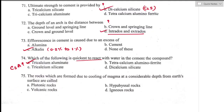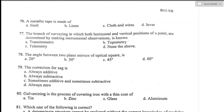Question number seventy-five: rocks formed due to cooling of magma at considerable depth from the earth's surface are called plutonic rocks. Option A is the right answer. Question number seventy-six: a metallic tape is made up of linen — it is light in weight and made of varnish strips of waterproof linen interwoven with small brass, copper, or bronze wire. Option B is the right answer.